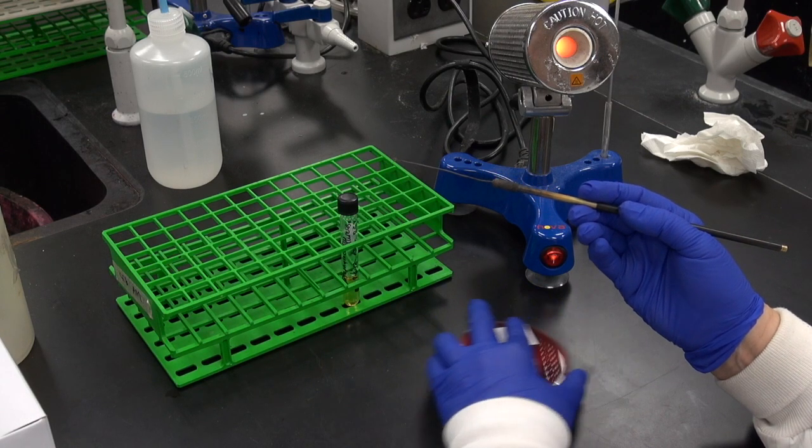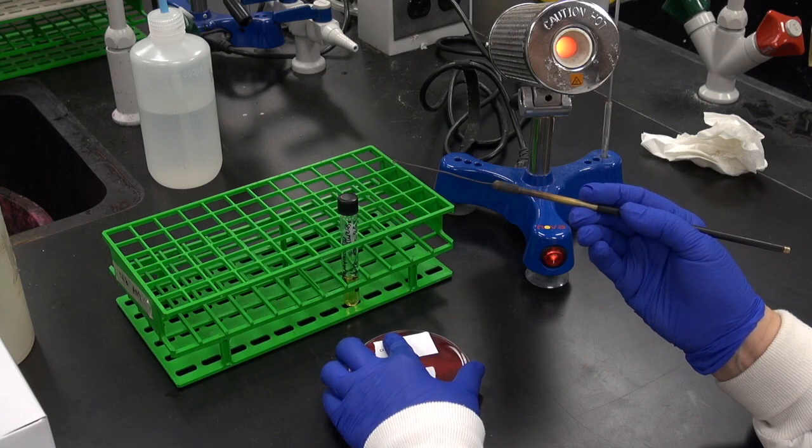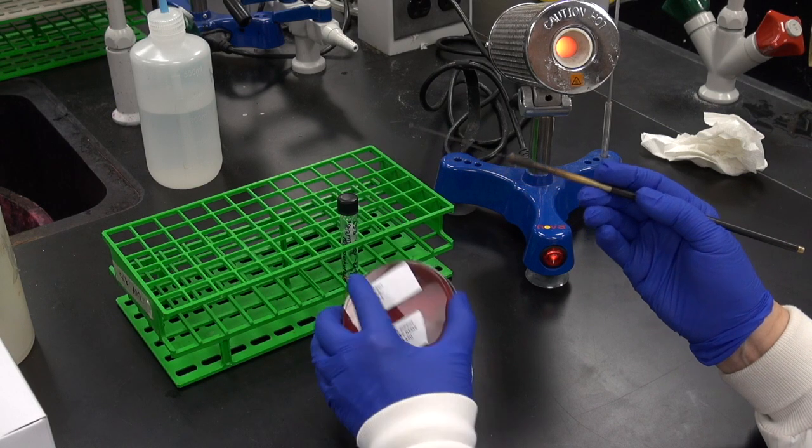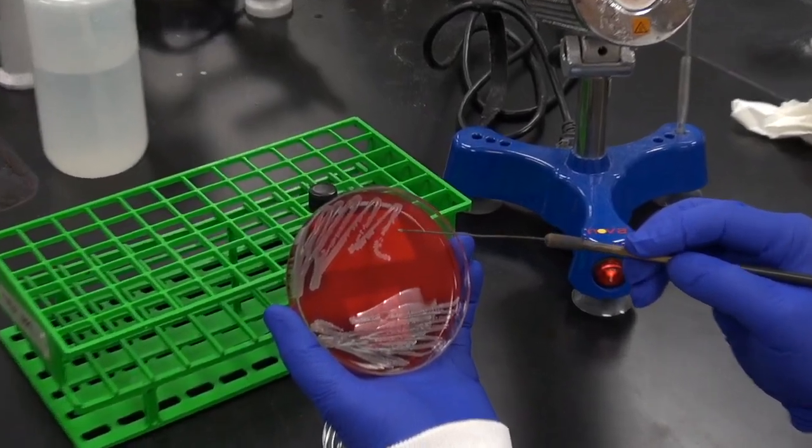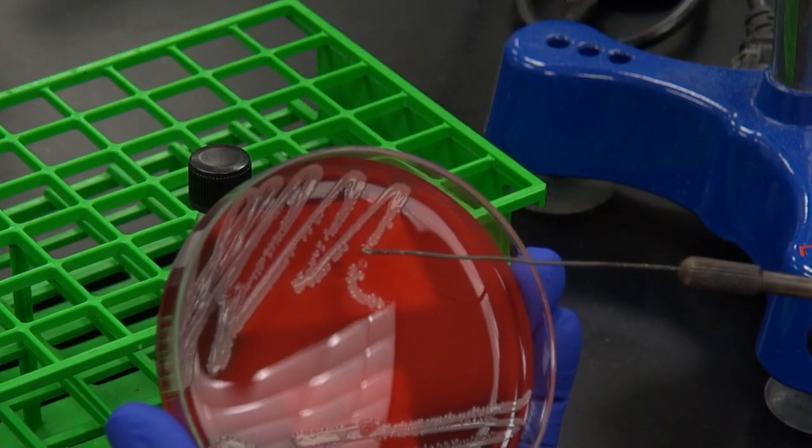Holding the loop in your dominant hand, open the culture plate and obtain some bacteria on the cooled loop by touching the center of a well-isolated colony. You don't need very much.